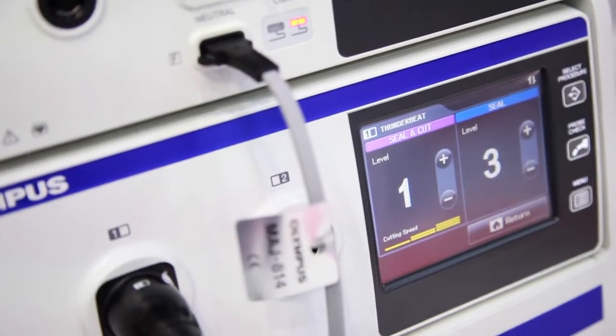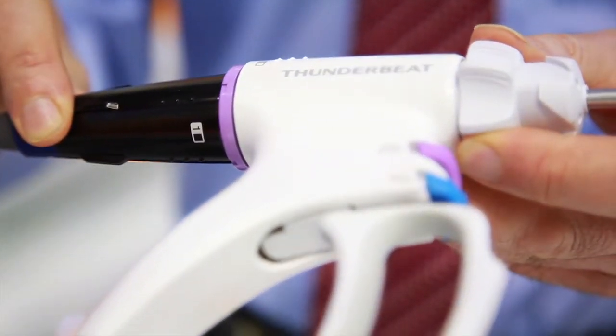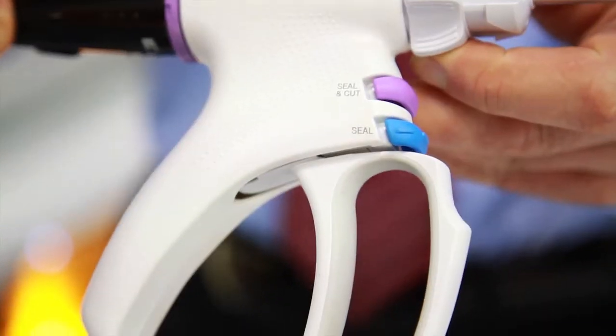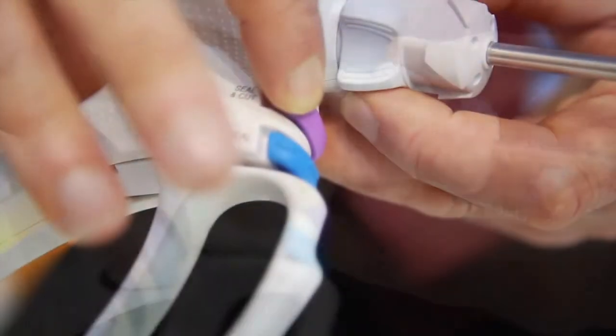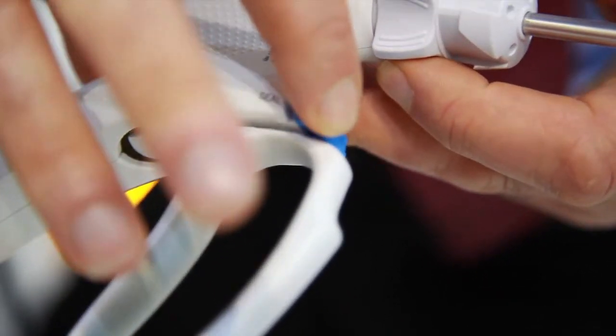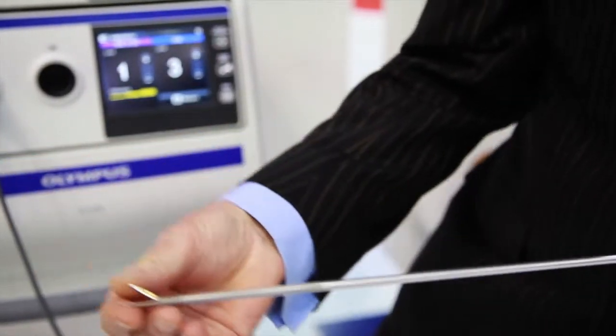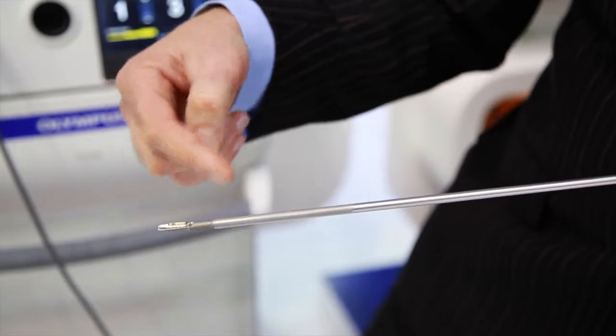The second device is the ultrasonic generator that powers the very unique ThunderBeat product. This is a new energy device called Synergistic Energy. It uses three main functions. The main function is seal and cut. With this function, it uses bipolar energy to seal the tissue and then ultrasonic energy to cut.